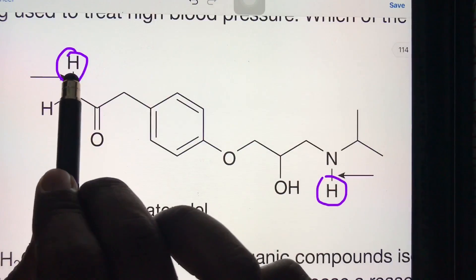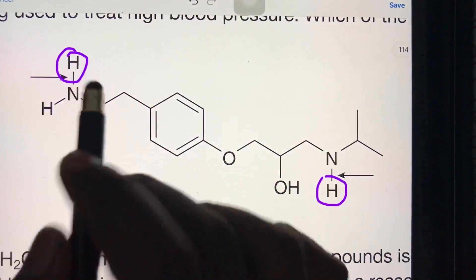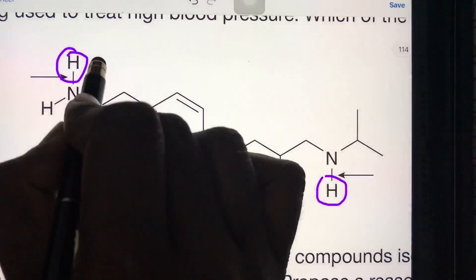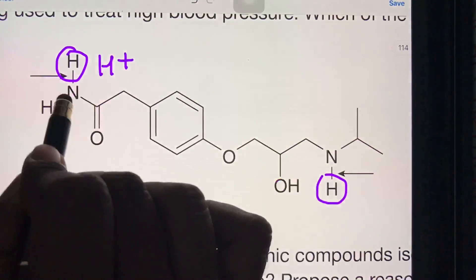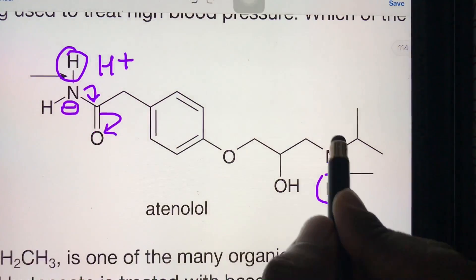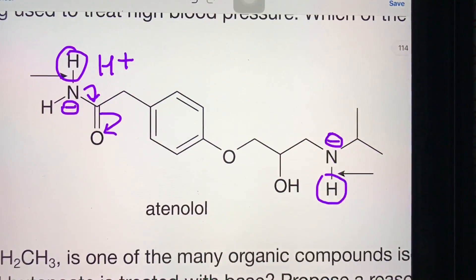this N-H bond can easily break down to give H+. This is because here the negative charge is delocalized, but here the negative charge is localized on nitrogen, so this is not stable.